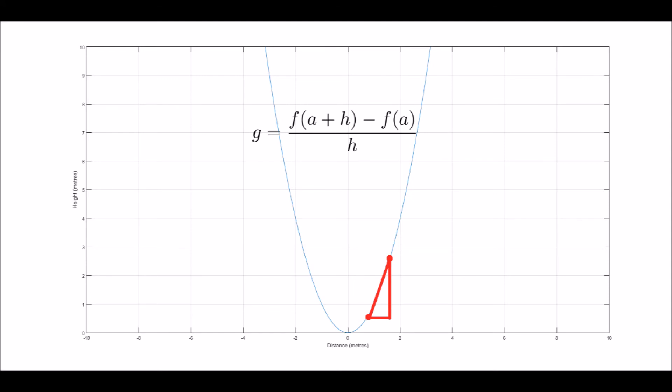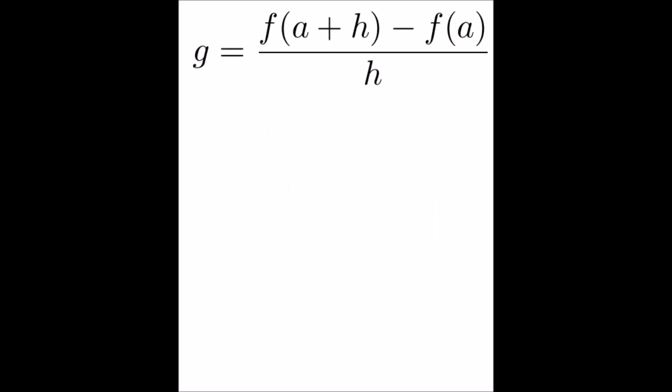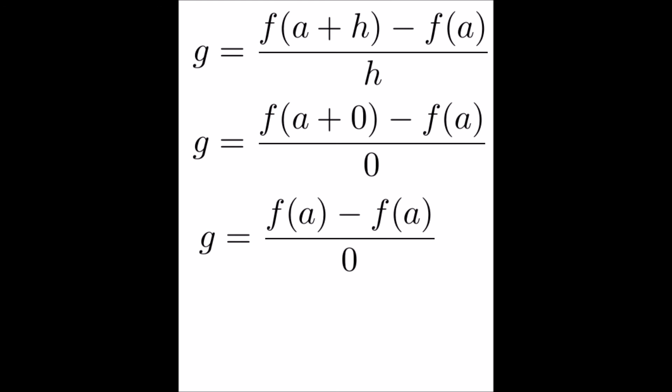What if we take h to be 0? In that case, clearly point A and point B are right in the same place, so we get the gradient at point A. You'll find, however, that you get 0 over 0. Since from our equation for gradient, we have this, which we can substitute h equals 0 into, and then we find the bottom of the fraction is 0, and the top is f(a) minus f(a), which is clearly 0. This 0 over 0 is something called an indeterminate form. It could be any value at all. So how do we figure out what this value actually is?